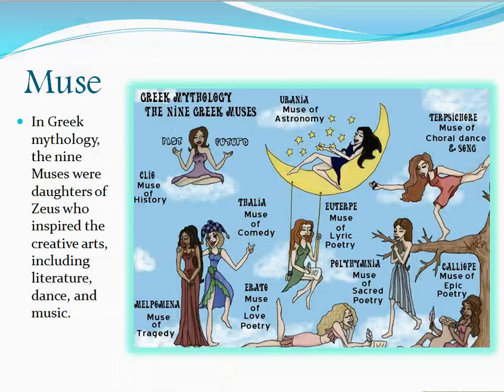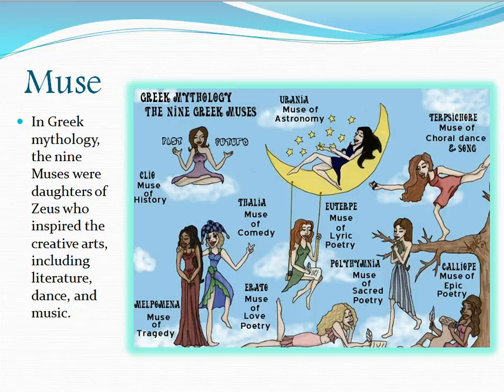So what is a muse? In Greek mythology, there were nine muses, and they were the daughters of Zeus. They were known for inspiring the creative arts, including literature, dance, music. You can actually see all of them in the illustration to your right. We have Terpsichore, the muse of choral dance and song.